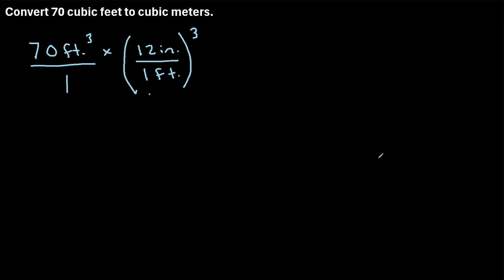Now once we have our answer in cubic inches, we then want to convert that to cubic centimeters. So we would multiply by, there are 2.54 centimeters per 1 inch. So we can write 2.54 centimeters for every 1 inch. And again, we're talking about cubed.